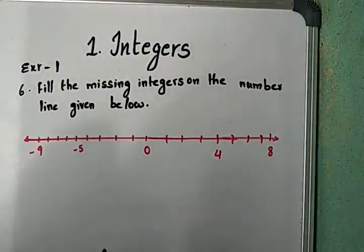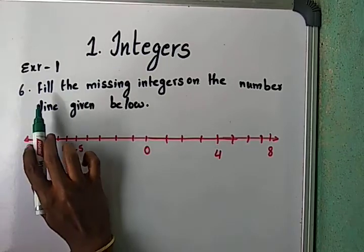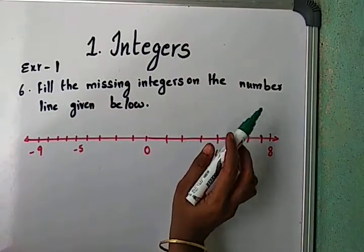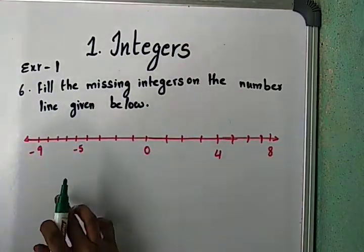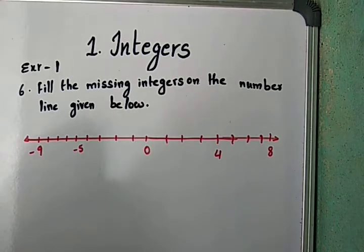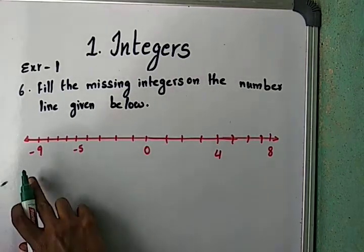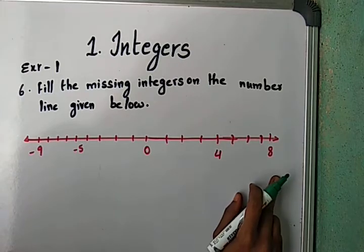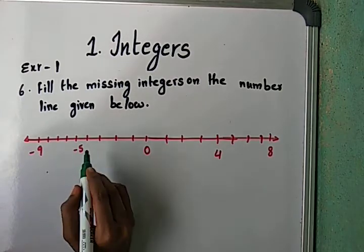Hi children. Next, in Exercise 1.6, fill the missing integers on the number line given below. Here they gave one number line with integers. We have two negative numbers, zero, and some positive numbers. In the middle of these integers, some numbers are missing.